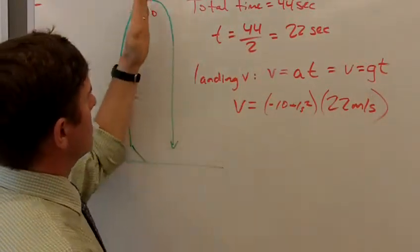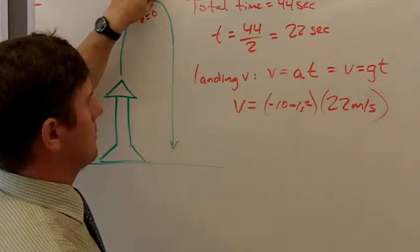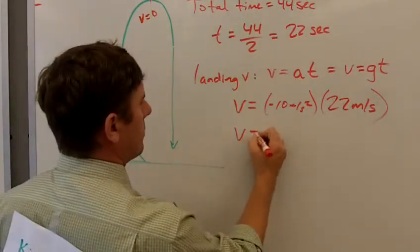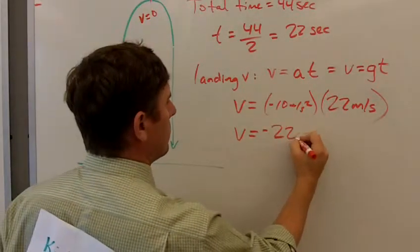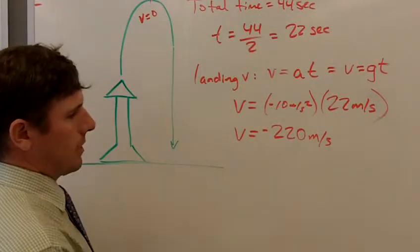Because we're only concerned with this object on its downward flight. It's as if somebody just took this rocket up there and just dropped it. And it fell for 22 seconds. Well, how fast would it be going when it hits the ground? Well, we multiply these numbers together and we get negative 220 meters per second.